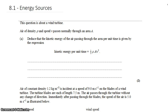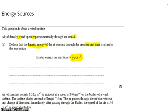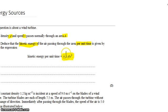David Kahn here with another question from the question bank. We're looking at topic 8.1 energy sources and wind turbines. We have air with a density ρ and speed v passes through a wind turbine with area A. Deduce that the kinetic energy of the air passing through per unit time is given by this expression. The kinetic energy per unit time is basically the power, but we want to show that the power of the wind turbine is this.